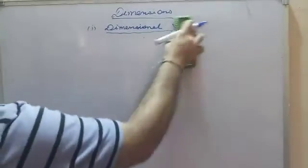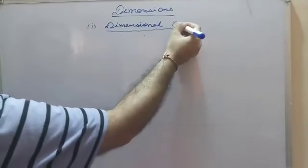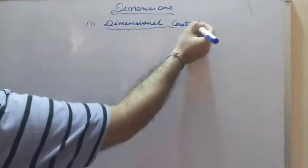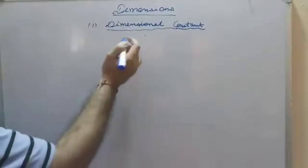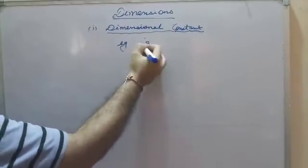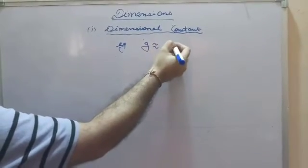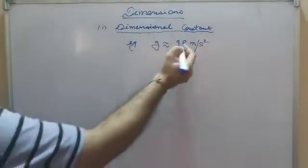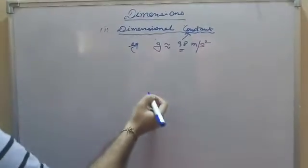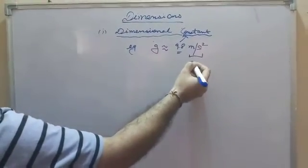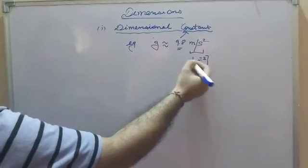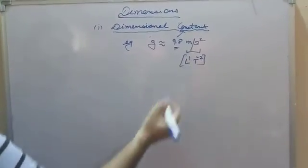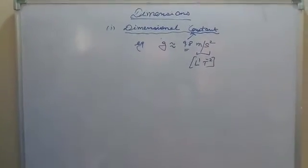The second type is dimensional constant — as the name suggests, the value is constant but it does have dimensions. For example, g (acceleration due to gravity) = 9.8 m/s², which has dimensions L¹T⁻². So that is called a dimensional constant.